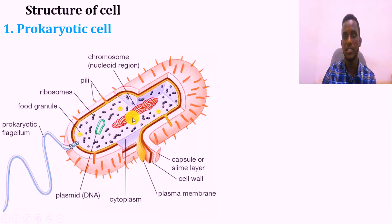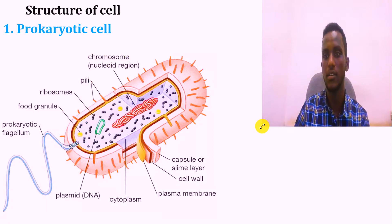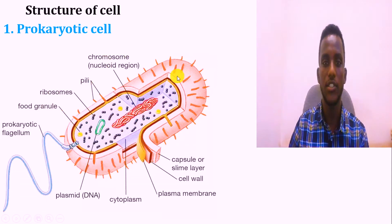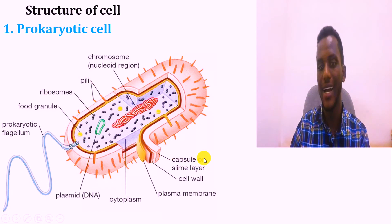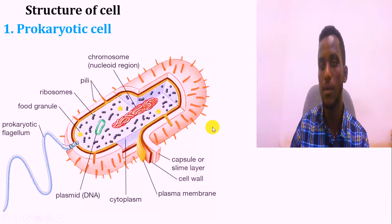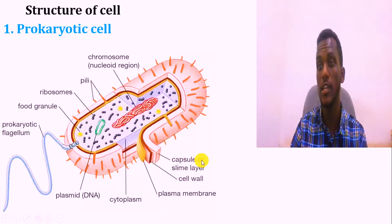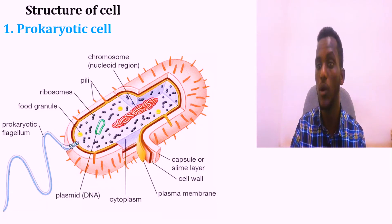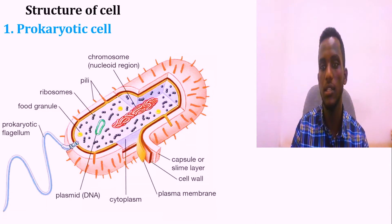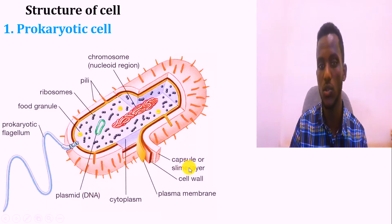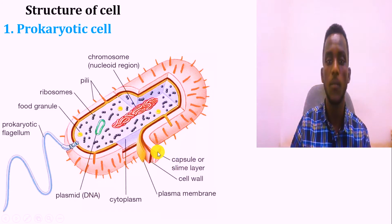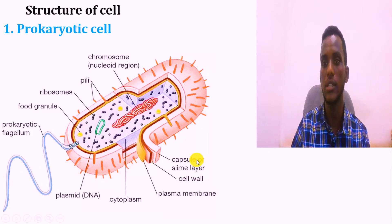This is the structure of the prokaryotic cell or bacteria. The bacteria, which is the prokaryotic cell, structure is as follows. The outer cover consists of a capsule or a slim layer - basically it is a glycocalyx, which is a carbohydrate, either tightly attached as a capsule or loosely attached as a slim layer. The outer cover of bacteria is a glycocalyx, which can be either a capsule or a slim layer.